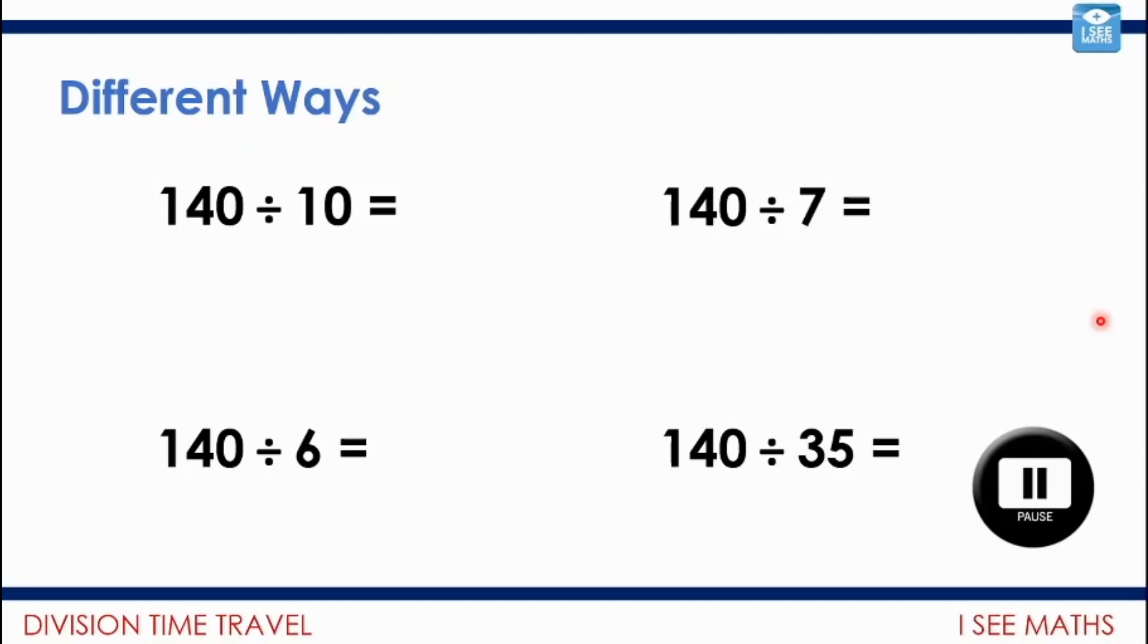Okay, well should we have a little look? Now 140 divided by 10, here I would actually just use this rule that I know for moving the digits into different columns. 140 is 100, 4 tens. If I divide by 10, I know I need to shift the digits, and so that becomes 1 ten and 4 ones, which is 14. So that's actually different to what we've described so far.